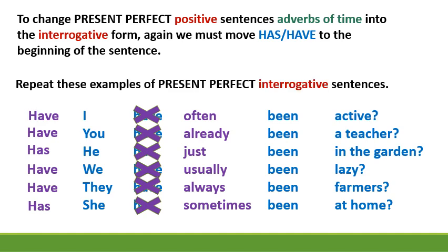Repeat these examples of present perfect interrogative sentences: Have I often been active? Have you already been a teacher? Has he just been in the garden? Have we usually been lazy? Have they always been farmers? Has she sometimes been at home?